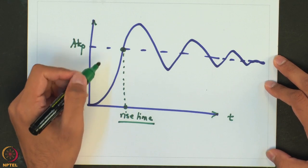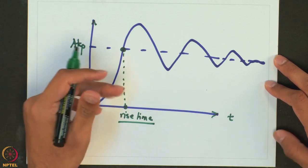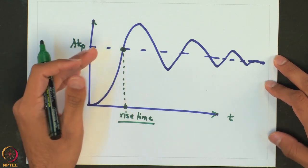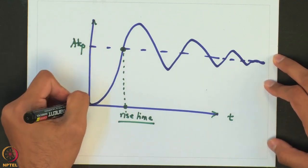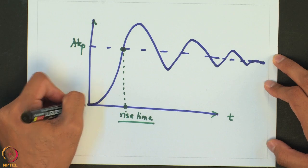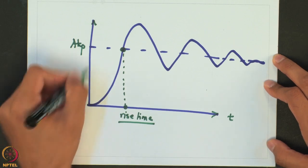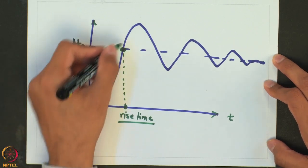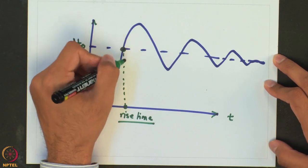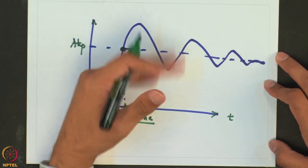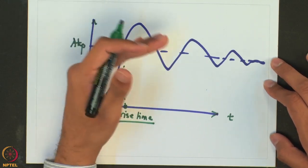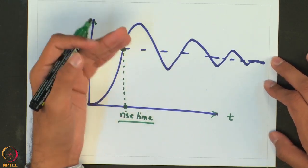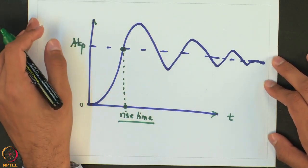If it is a controller, we want the rise time to be as small as possible because we want to move from the original point to the final point as quickly as possible, so that our operating point has shifted — even if not yet stabilized.